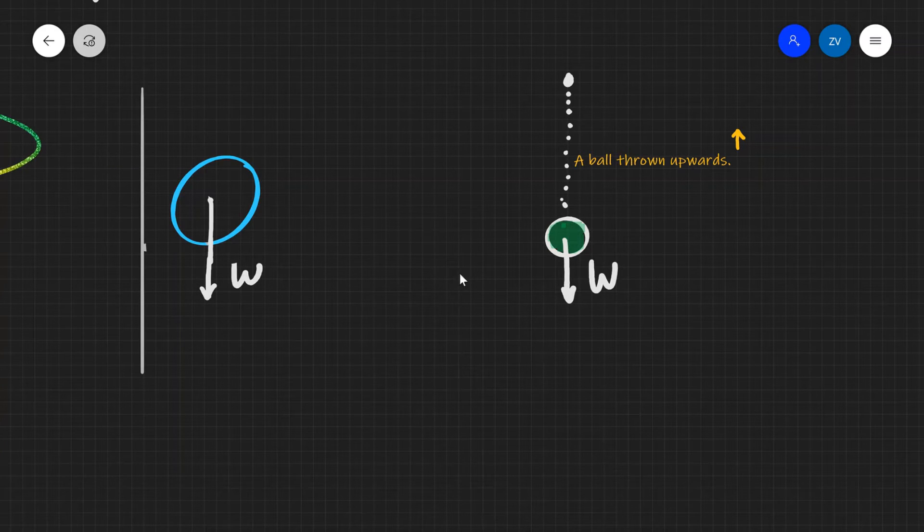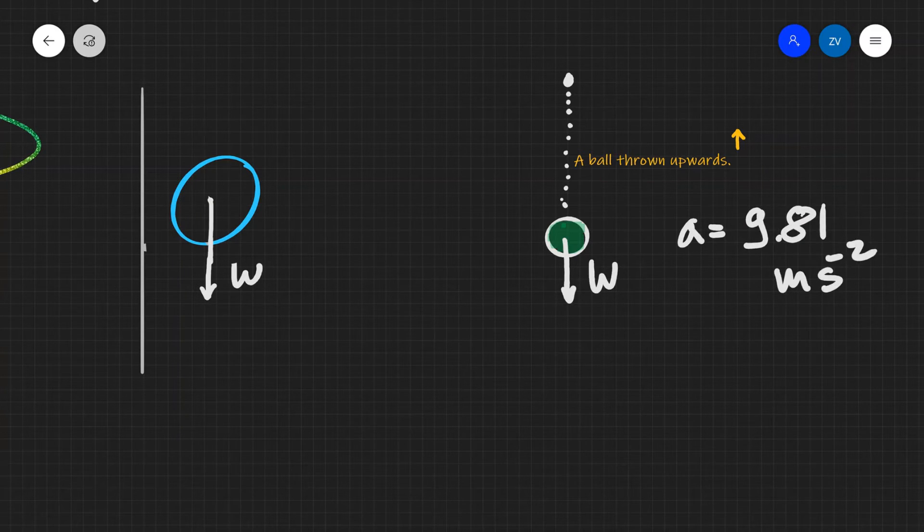So in other words, an unbalanced force causes an acceleration. And in both of those cases, the acceleration a is just 9.81 meters per second per second, which is the acceleration due to gravity on average around the earth.